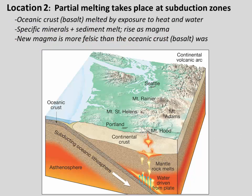Now let's look at a second location where partial melting takes place: a subduction zone. Here at subduction zones, we have oceanic crust — which is mostly basalt — diving down into the mantle. As it goes down, it gets heated and we start to melt specific minerals within the oceanic crust. We also start to melt the sediment that was riding on top of that crust. So we're going to have another episode of partial melting where we melt specific minerals out of the sediment and out of the oceanic crust.